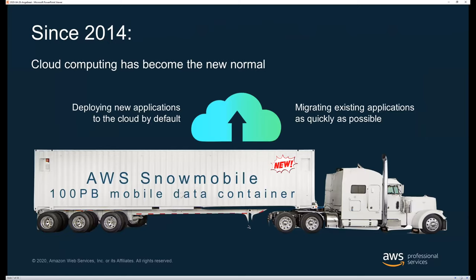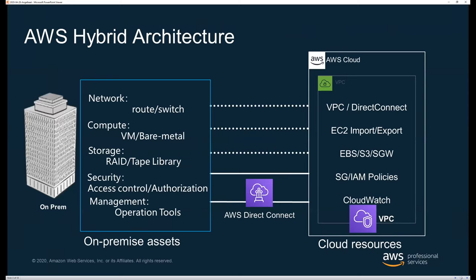I'll skip over Snowmobile, Snowball, and Storage Gateway since Mahesh covered those. I will second his point about CloudEndure — in Professional Services we've had many customers using CloudEndure with great success for lift-and-shift migrations. Most customers also continue to use hybrid architectures, keeping on-premise assets while doing migrations and refactoring. We help them use Direct Connect and VPNs to access cloud resources and use a combination of on-premise and cloud.